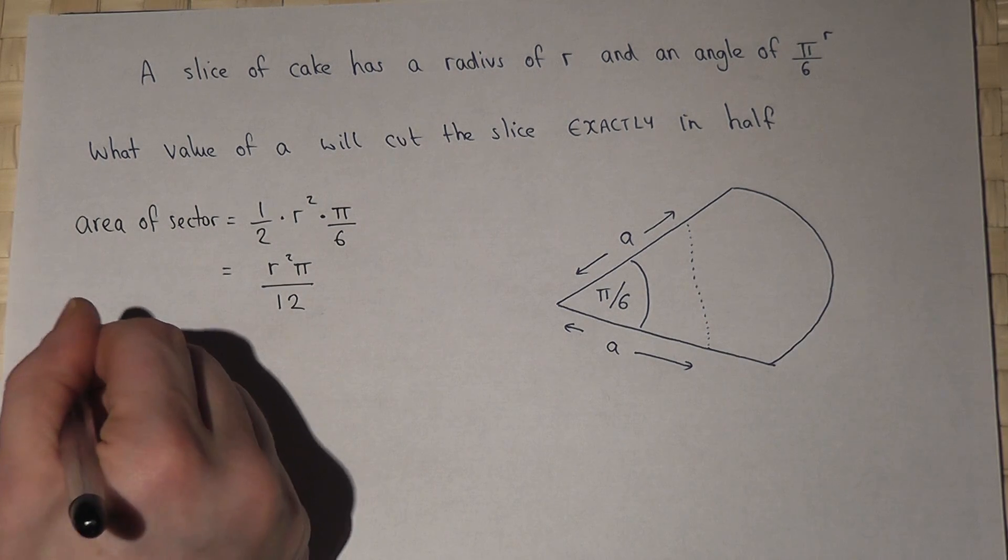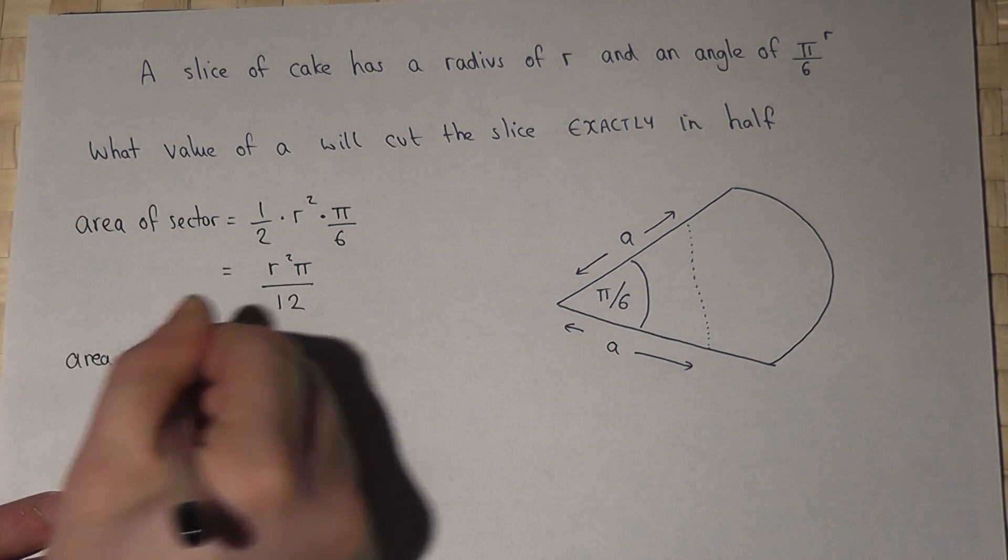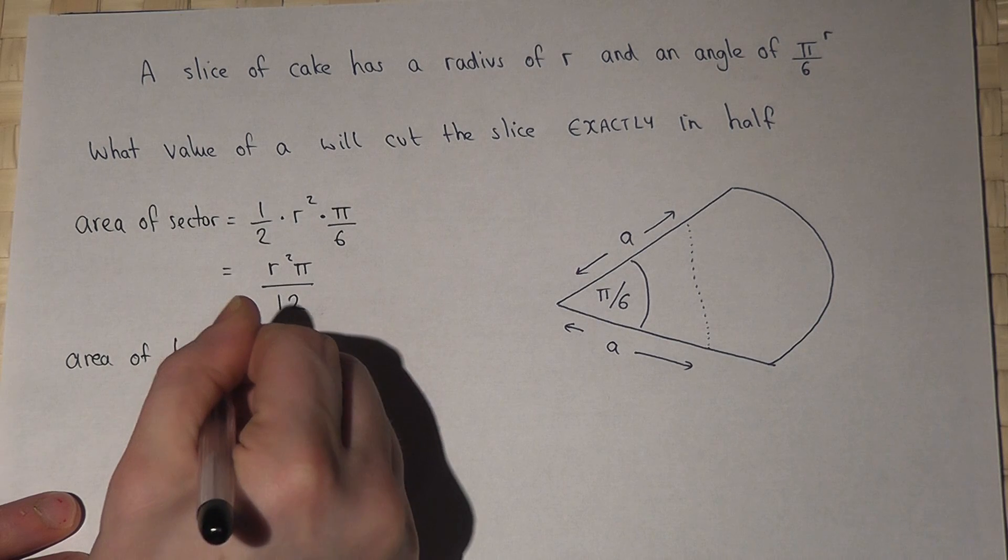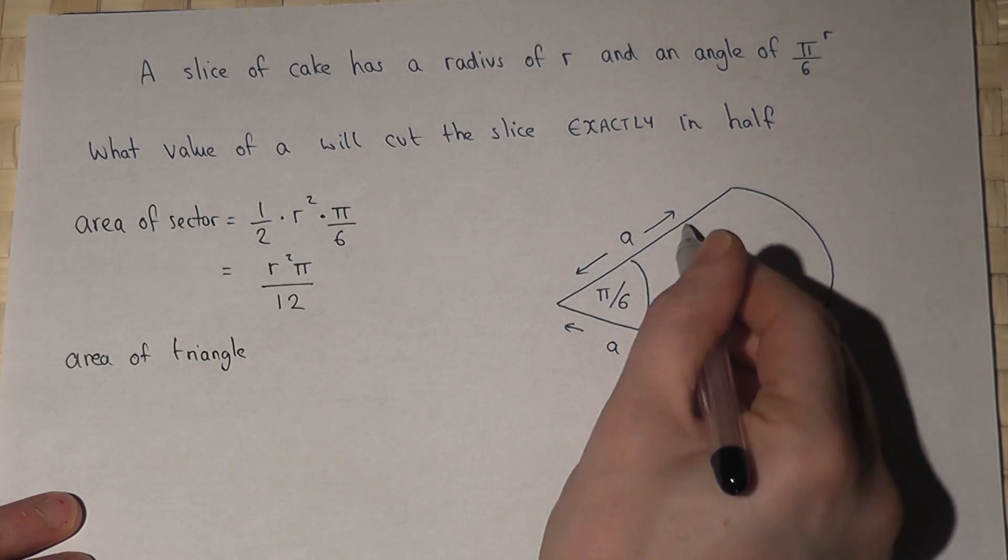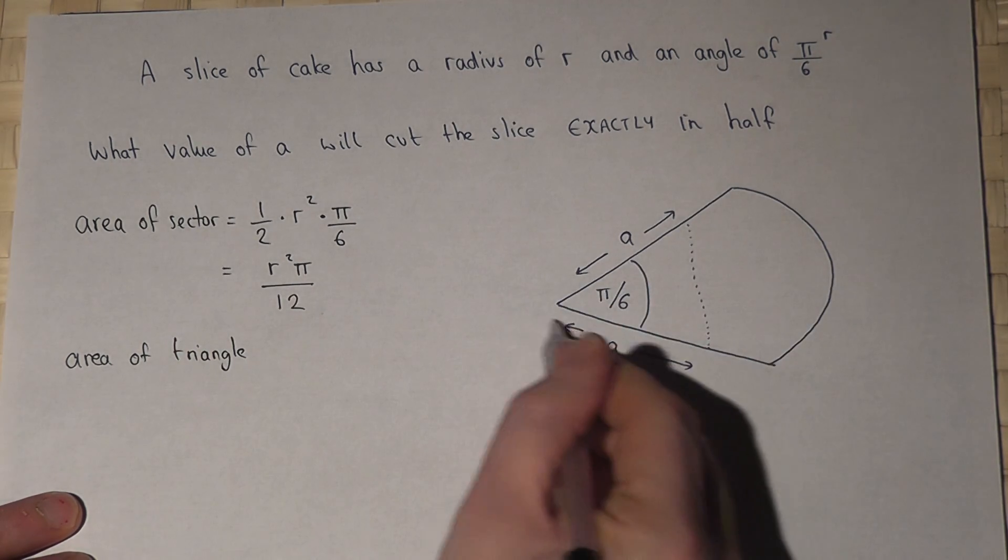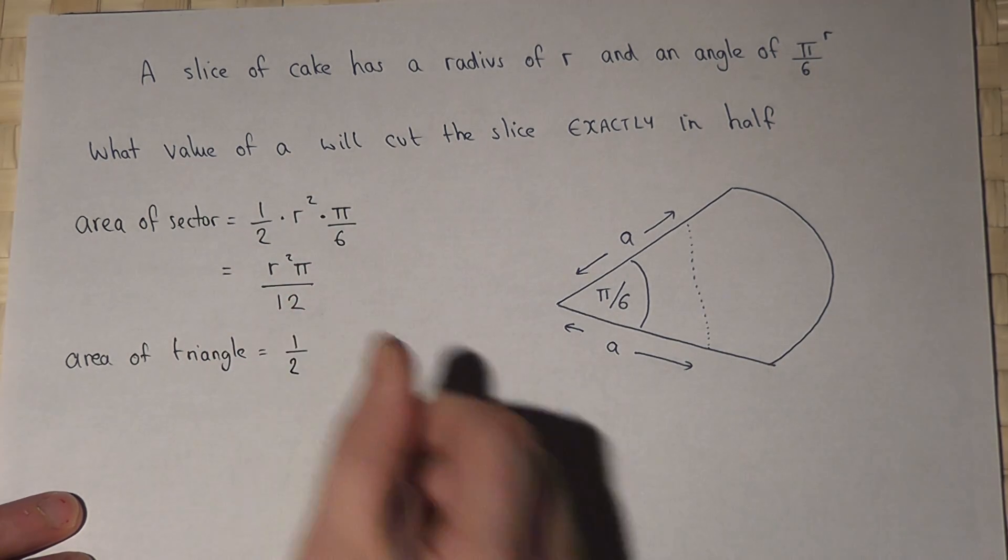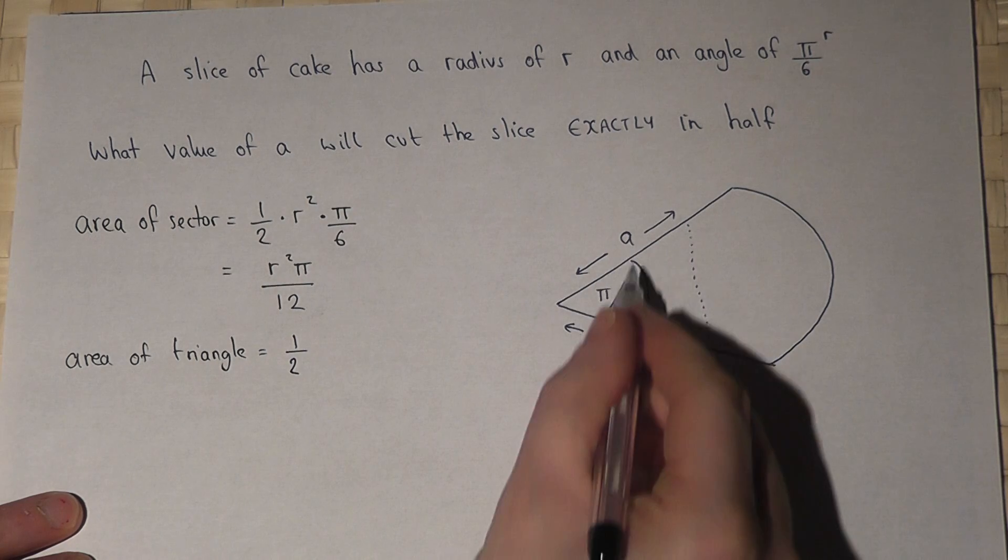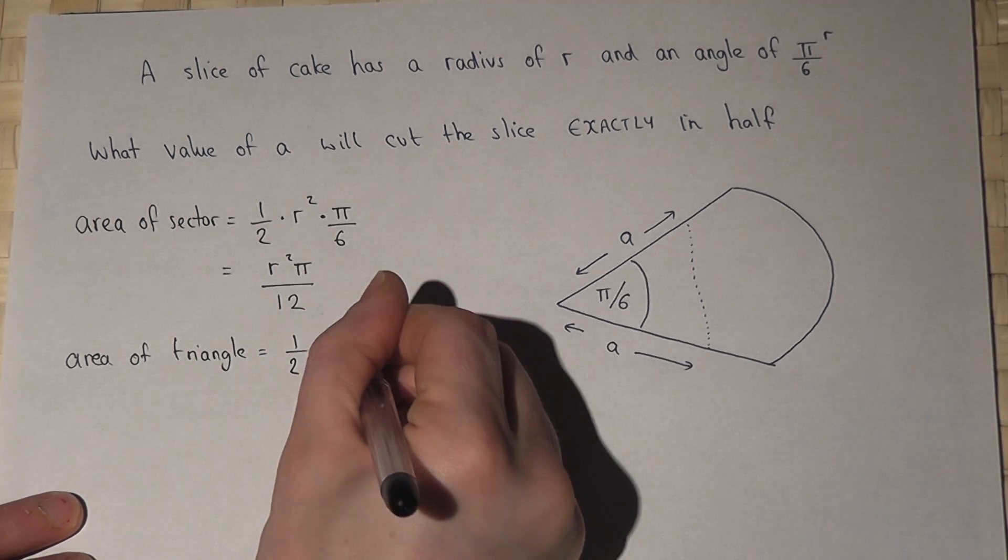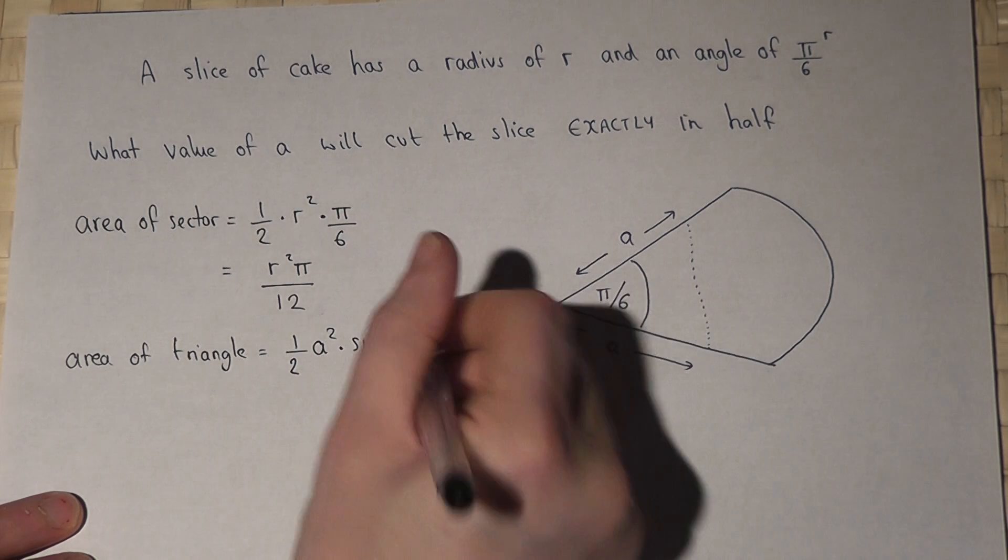The area of the triangle, this area here, is given by a half R A squared times sine of the angle.